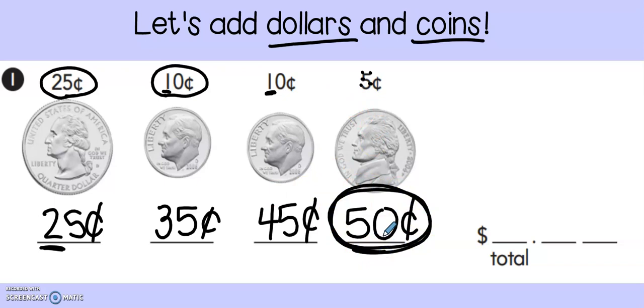So all of these coins added together gives me 50 cents. Now, second graders, is 50 cents enough to give me a dollar? No, it is not. A dollar is 100 cents, and 50 is not 100. So right here where there's our dollar line, I'm going to put a zero, because 50 cents gives me zero dollars. I don't have enough. But on these last two lines, I can write the number 50. So even though there's a dollar sign here, this amount still stands for 50 cents because it comes after the decimal. I have zero dollars and 50 cents.